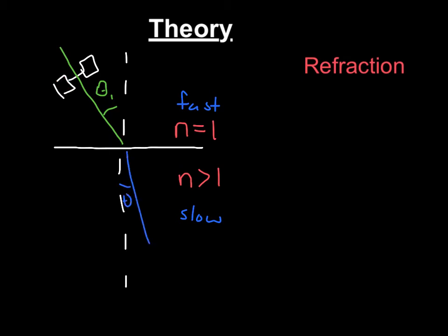Right here, and this is theta 2. The relationship between this is given by Snell's law, so you have n1 sine theta 1 equals n2 sine theta 2. And remember that all your angles are measured from the normal.